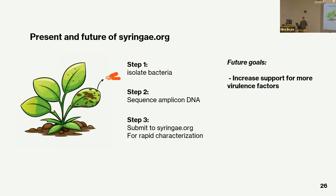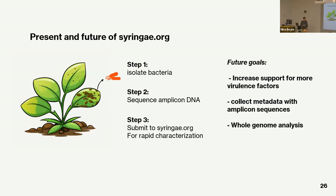Future goals for syringi.org: type 3 effectors are not the only virulence factors, so adding support for all virulence factors would be great. A really big goal is to collect metadata when people upload amplicon sequences — routine amplicon sequences that might otherwise be lost data. This data could be used for epidemiological purposes and understanding pathogen interactions. Also extend it to whole genome analysis for cases where marker gene sequencing doesn't work well.